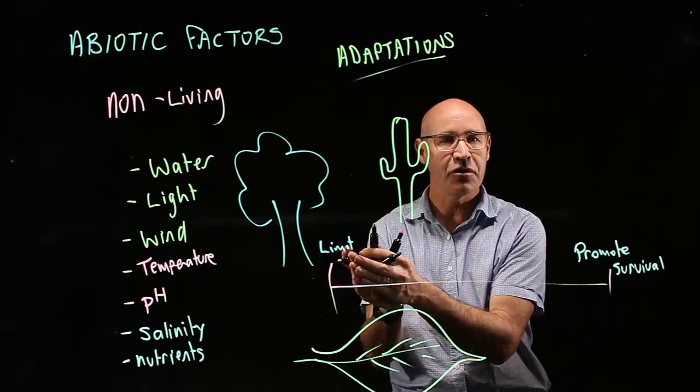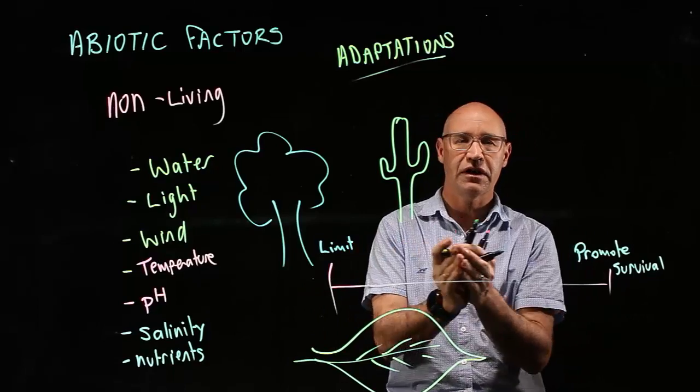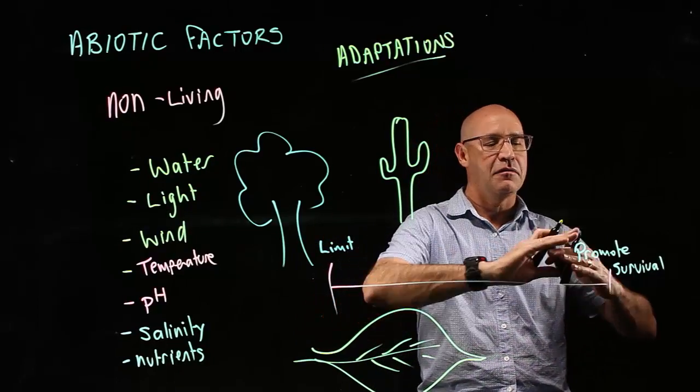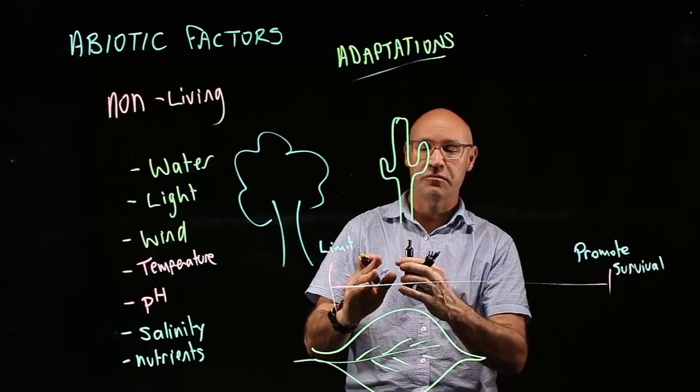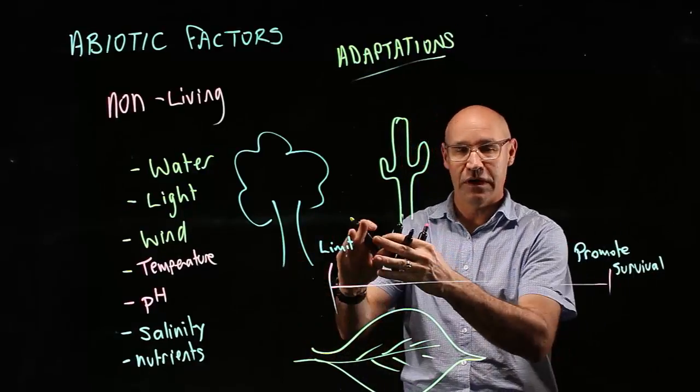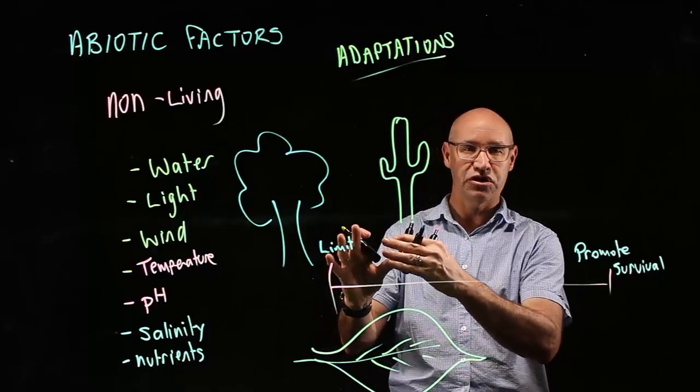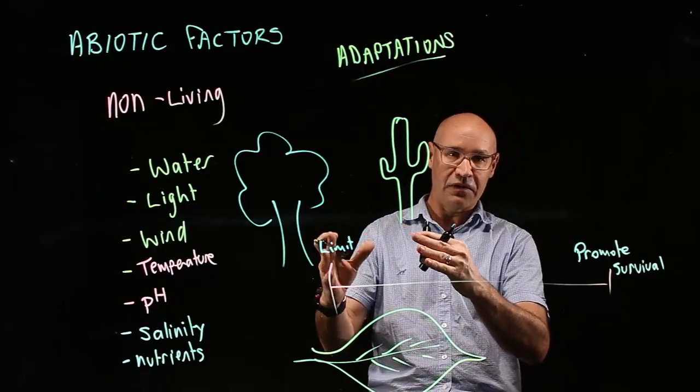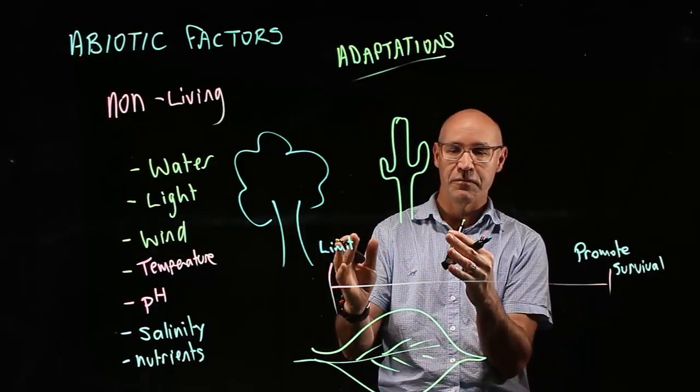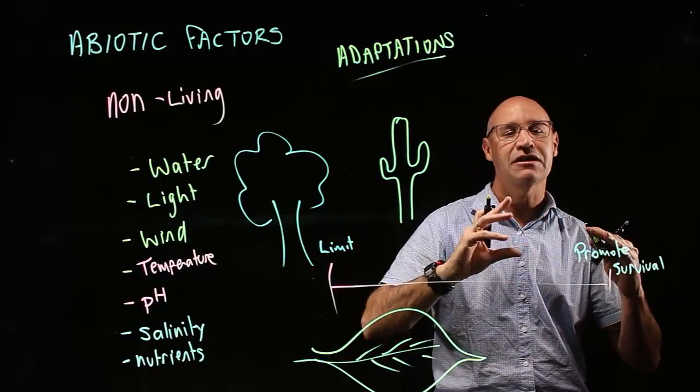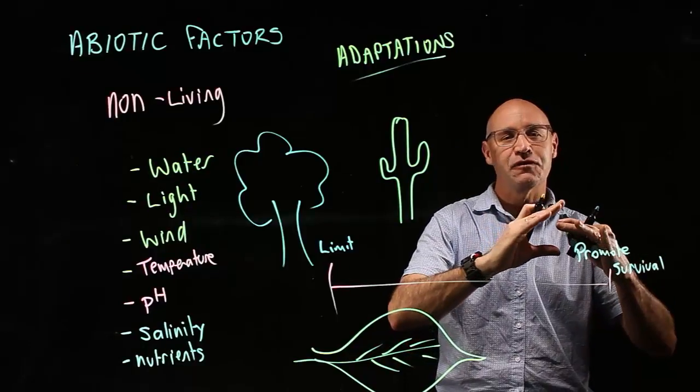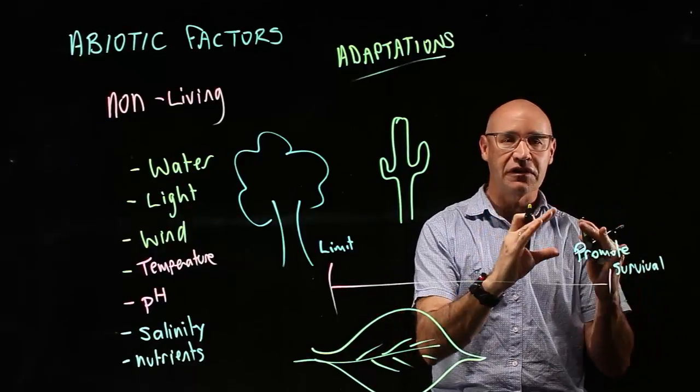Abiotic factors are along this sliding scale in different areas. Things might be really good and other things might be really challenging. To be able to survive in an area where the abiotic factors are really challenging, you need to have very good adaptations to be able to survive. You would imagine all organisms want to live where it's pretty good, where conditions are really good.